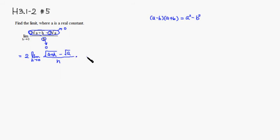Then we multiply top and bottom by almost the same thing as the numerator except for the sign. So you have √(a+h) + √a. And we have to do the same thing to the denominator so that we don't change the quantity of the limit.